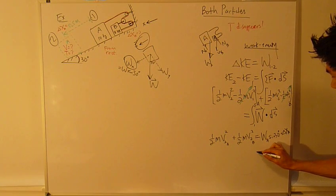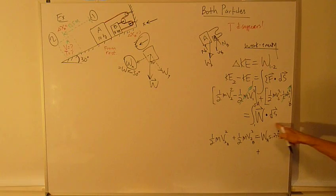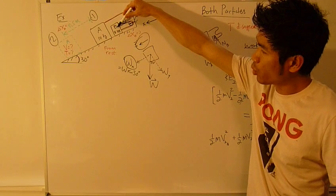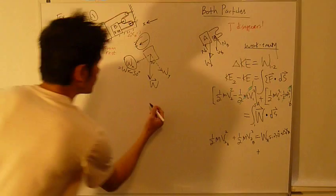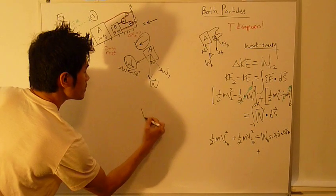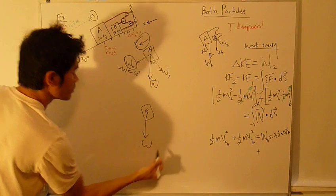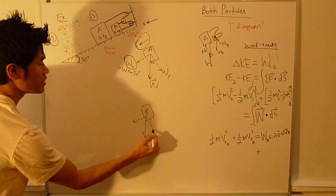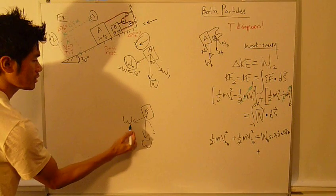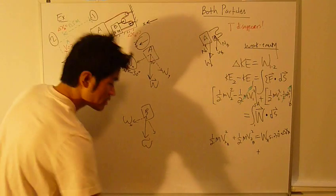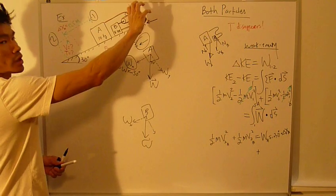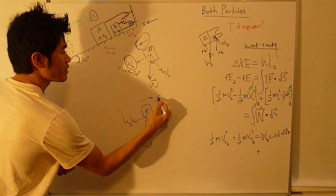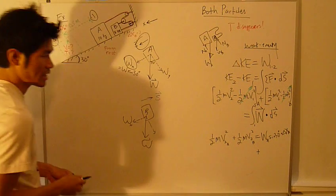And then plus, this is the sum for B. The weight of B, I'm going to decompose this weight into these two components again. For B, B travels upward as A travels down, so this is my S vector now for B, pointing up.